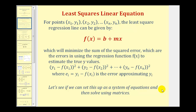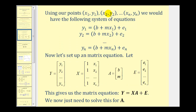Let's set this up as a system of equations and then solve using matrices. Every given point creates a linear equation in the form: y sub n equals b plus m times x sub n plus e sub n, where b is the y-intercept, m is the slope, x is the given x value, and e is the small error from using the regression line to predict the true y value. Each point creates a linear equation, and together we have a system of equations which we can write as a matrix equation.